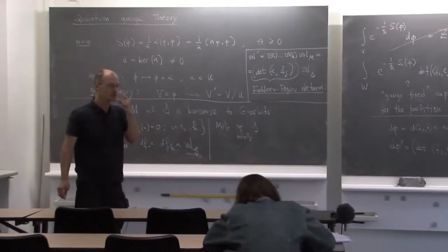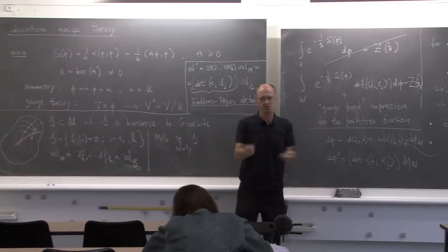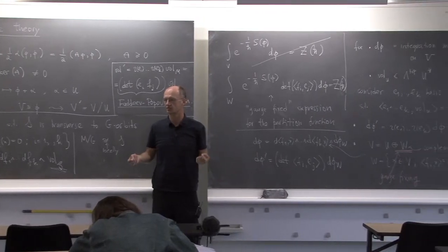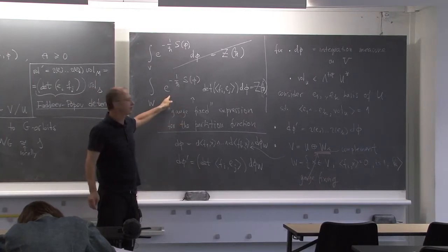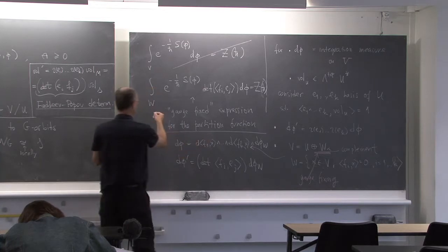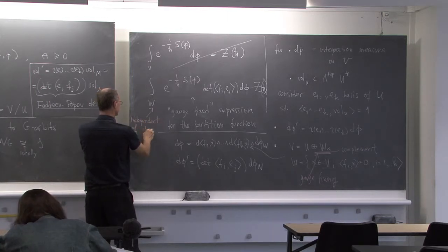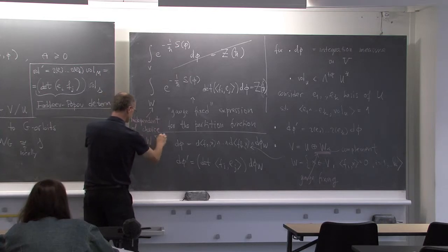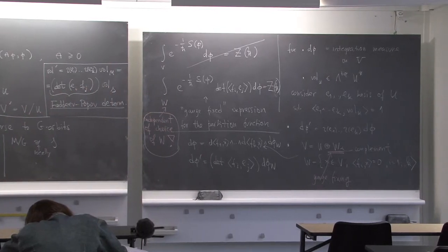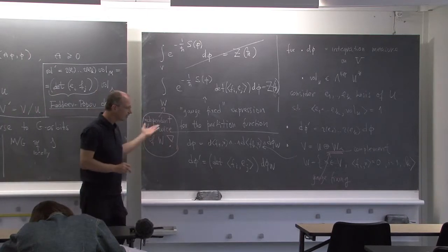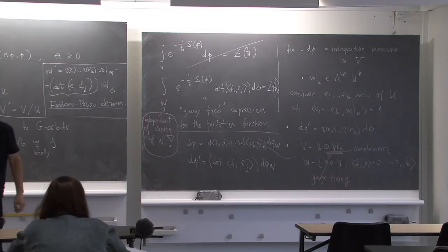In the infinite-dimensional case — when the field theory is non-trivial — this is typically not guaranteed, and it involves difficult considerations whether different gauge fixings give the same result. But here, more or less by definition, the result is independent of W. That's the sketch of what we want to do in the infinite-dimensional setting.